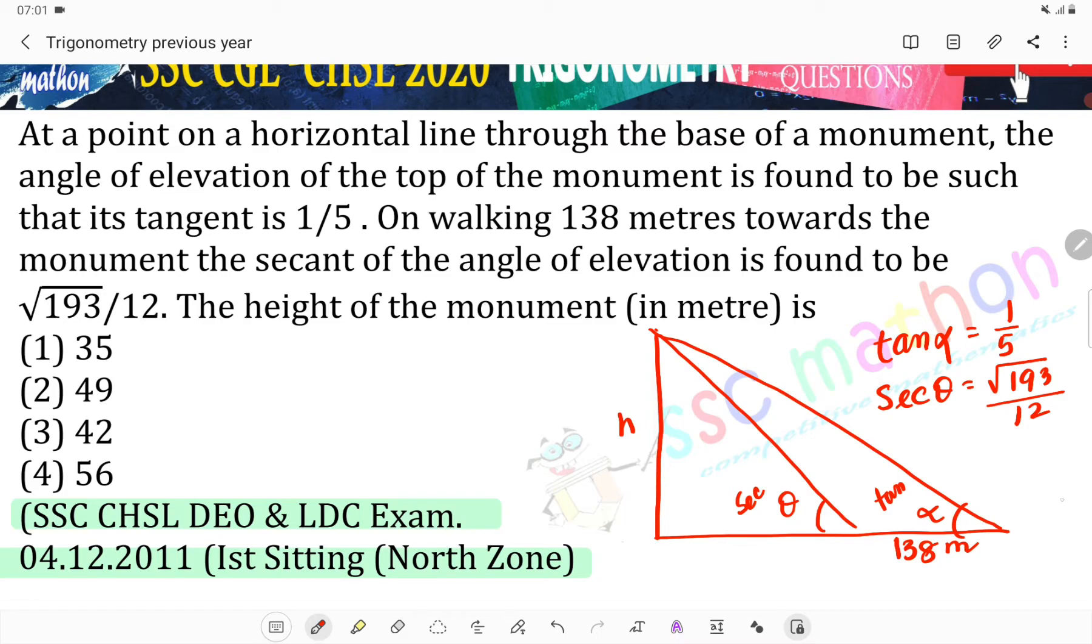From tan(α) = 1/5, base equals 5h. So this section we got total 5h.